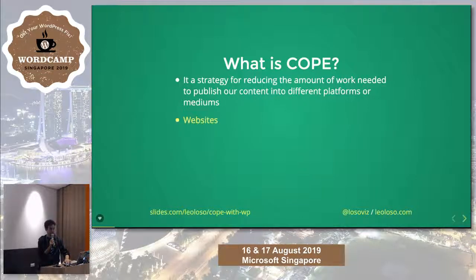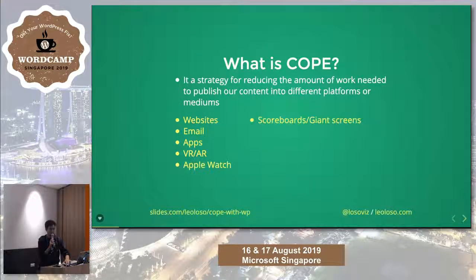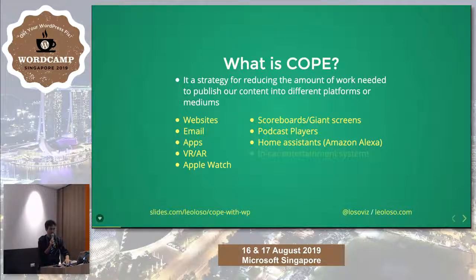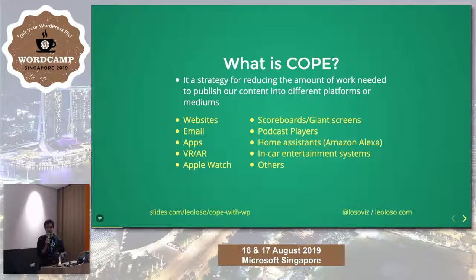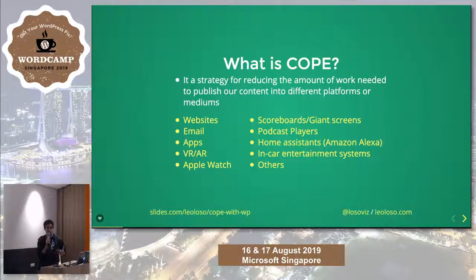Like which ones? Like websites, email, apps, virtual reality, augmented reality, Apple Watch, scoreboards or giant screens, podcasts, home assistants like Amazon Alexa, in-car entertainment systems, or others — you name it. So the idea is you have an application running on a website, maybe you have a newsletter, maybe you have an app, and you don't want to work so much adapting the content for different platforms. How can we minimize this amount of work?